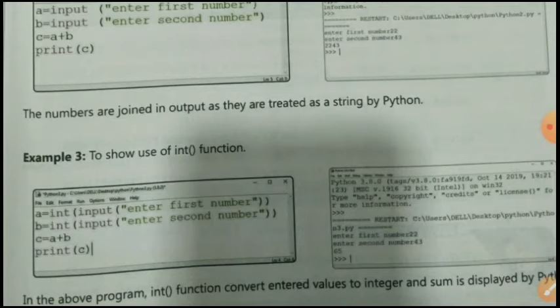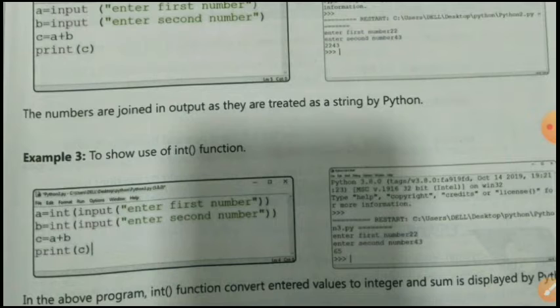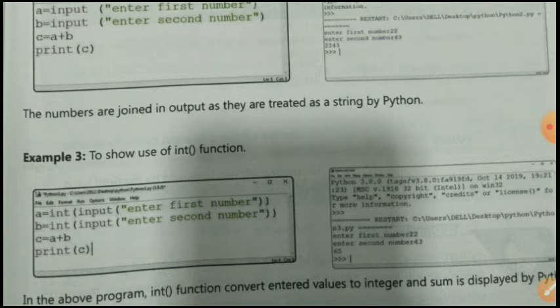To show the use of the integer function, in example number three: a = int(input('Enter first number')), b = int(input('Enter second number')), then c = a + b, then print(c). You have to close the parentheses two times for each input call.